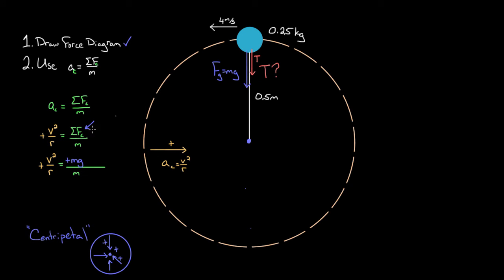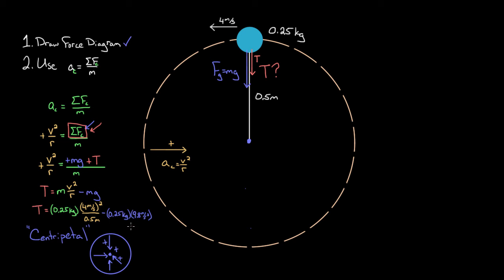We also have the force of tension. Do we include it? Yes, because it also points toward the center of the circle — so it's included as a positive centripetal force. Both gravity and tension together make up the net centripetal force in this case. Solving for the tension, we multiply both sides by mass and subtract mg from both sides, giving: T = mv²/r − mg. Plugging in numbers, the tension in the rope is 5.55 newtons.